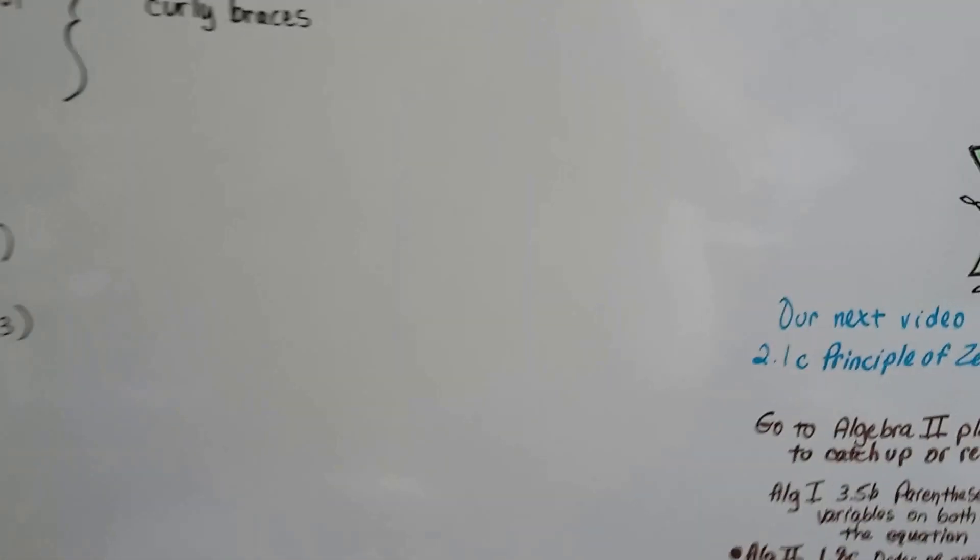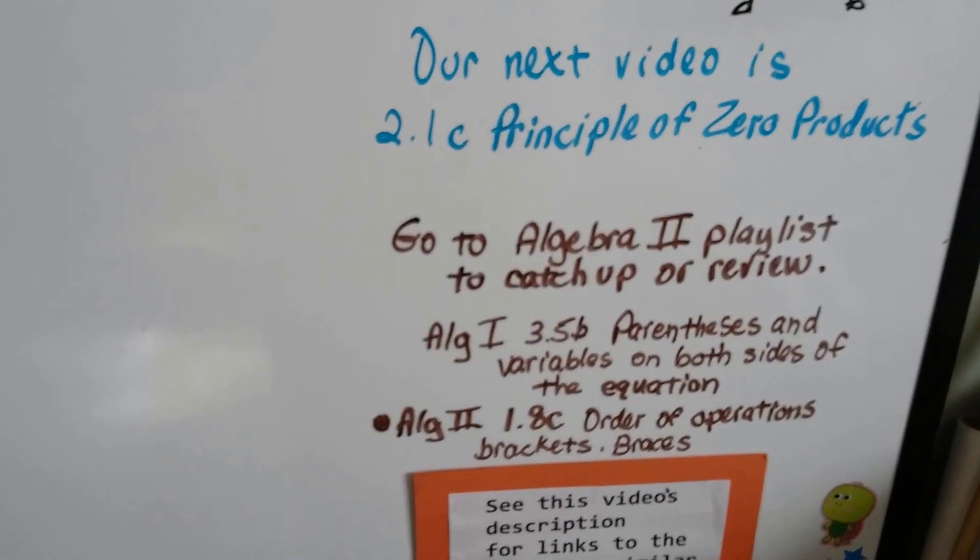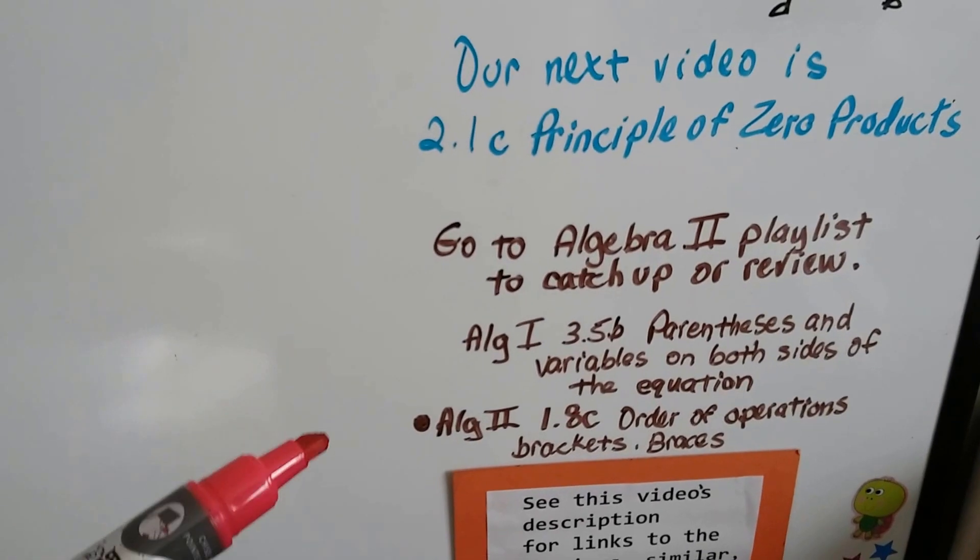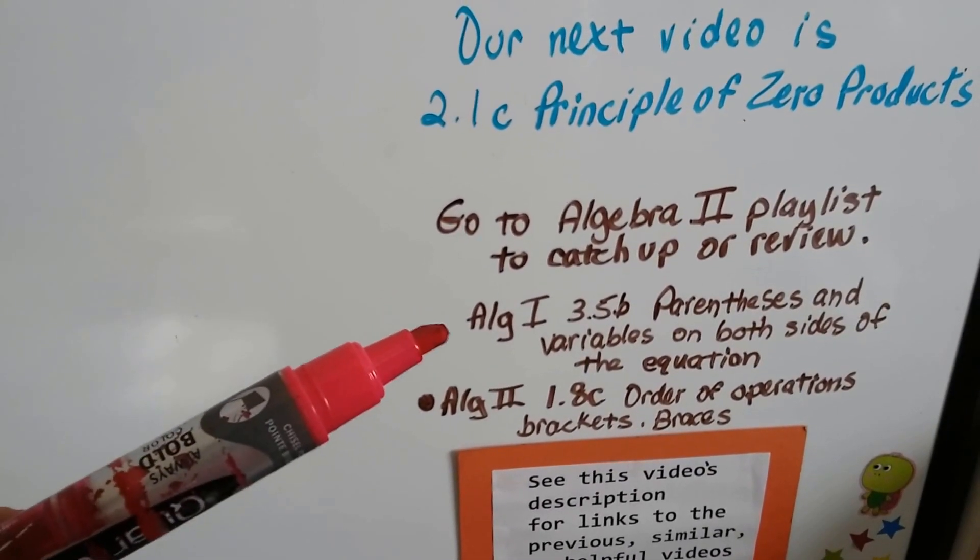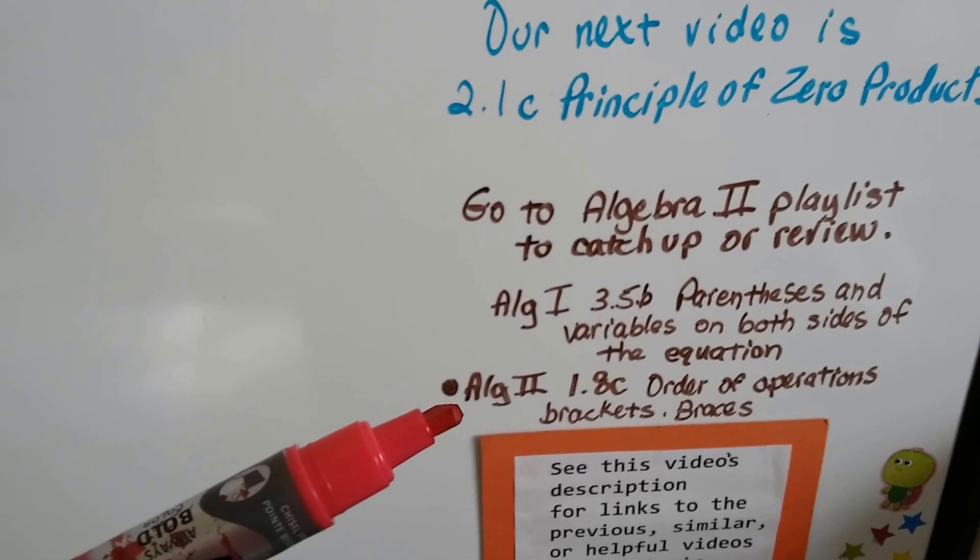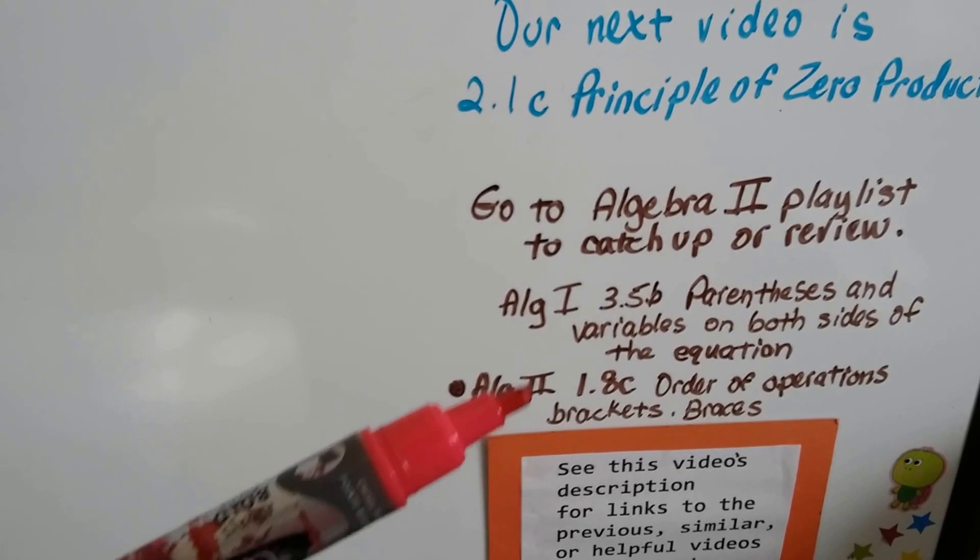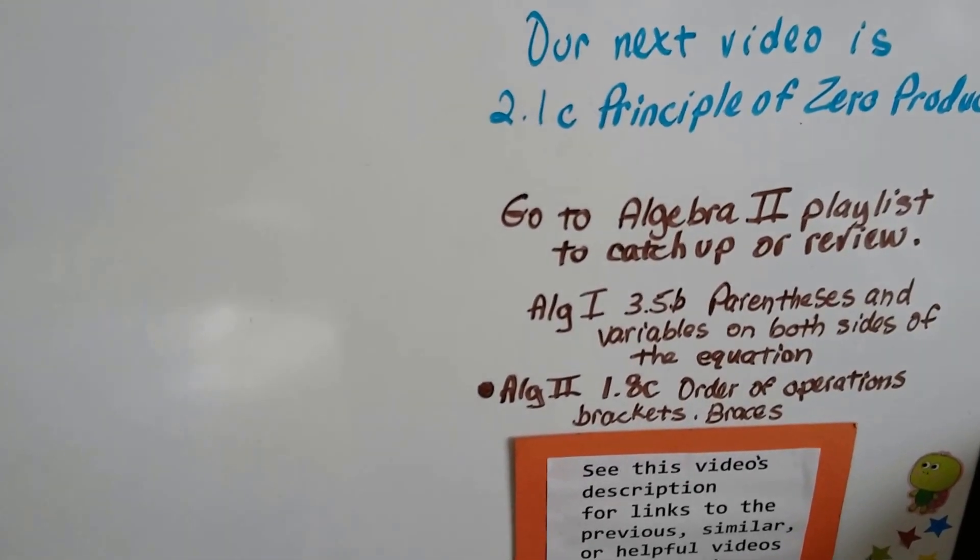Our next video is going to be 2.1c, and we're going to talk about the principle of zero products. And if you want to go to the description of this video, you can see the Algebra 1 video link for parentheses and variables on both sides of the equation. And there's going to be that link for the Algebra 2 video that I was talking about, 1.8c, where we talked about brackets and braces.